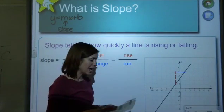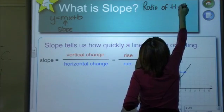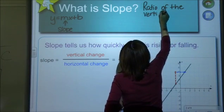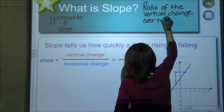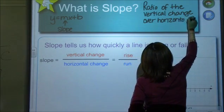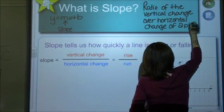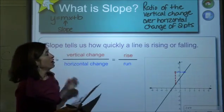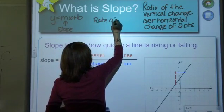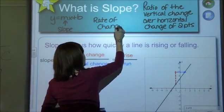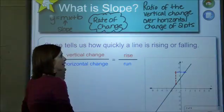But slope is actually a ratio of the vertical change over the horizontal change of points, two points. I also want you to think of it as a rate of change. The nice thing about change is that when you were younger and you were learning about words, change means subtract. That might help us.